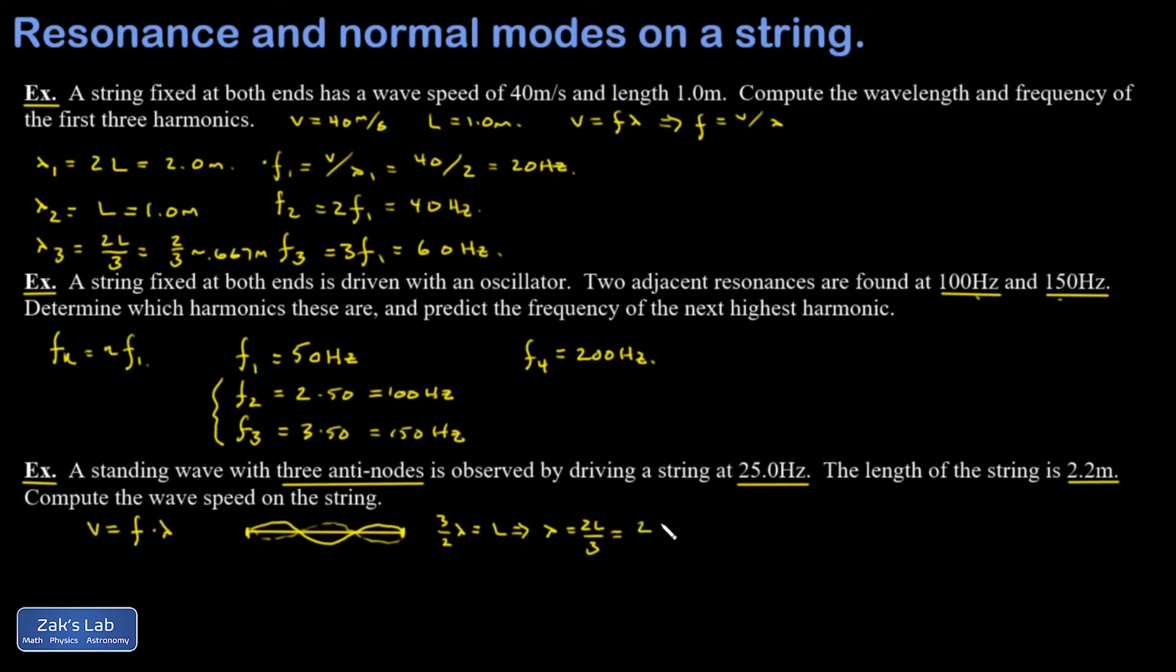And plugging in my numbers, I have 2 times 2.2 over 3. And that comes out to 1.467 meters, just keeping a little bit of extra precision. Now to get the wave speed.